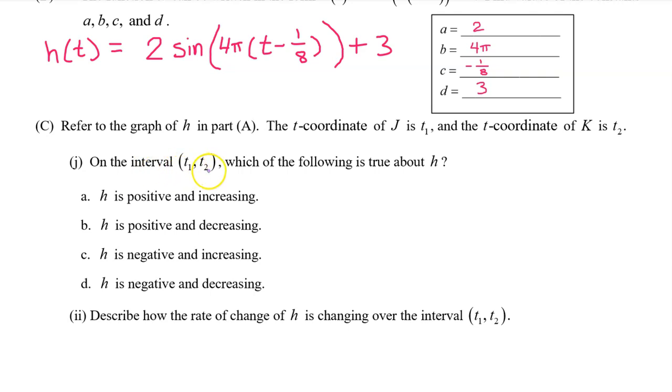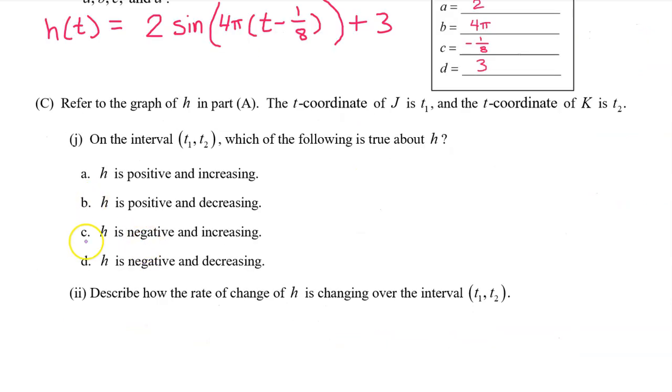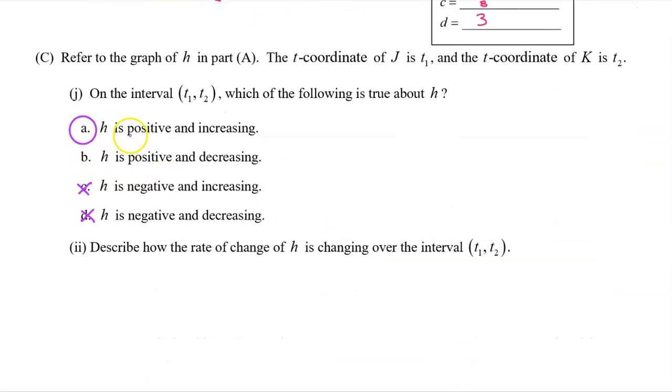On the interval from t1 to t2, which of the following is true about h? First let's decide if h is positive or negative on this interval. Here is the portion of h of t from t1 to t2. Look at these output values. They are all between 1 and 3, so the output values are all positive. So we can throw out options c and d, which say h is negative. Now we need to decide whether h is increasing or decreasing. Well, h is clearly rising from left to right. So on this interval, h is increasing. So the answer is a.